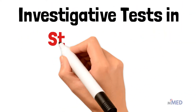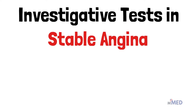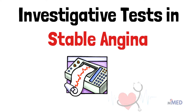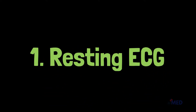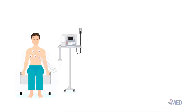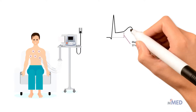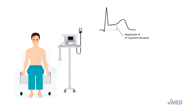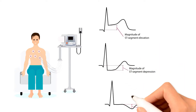Welcome back. In this video we will learn about the investigative tests that you need to do when a patient comes presenting with stable angina. Number one: resting ECG. This is the normal ECG done when the patient is at rest. We can observe ST wave elevations, ST wave depressions in a reversible format, and also T wave inversions.